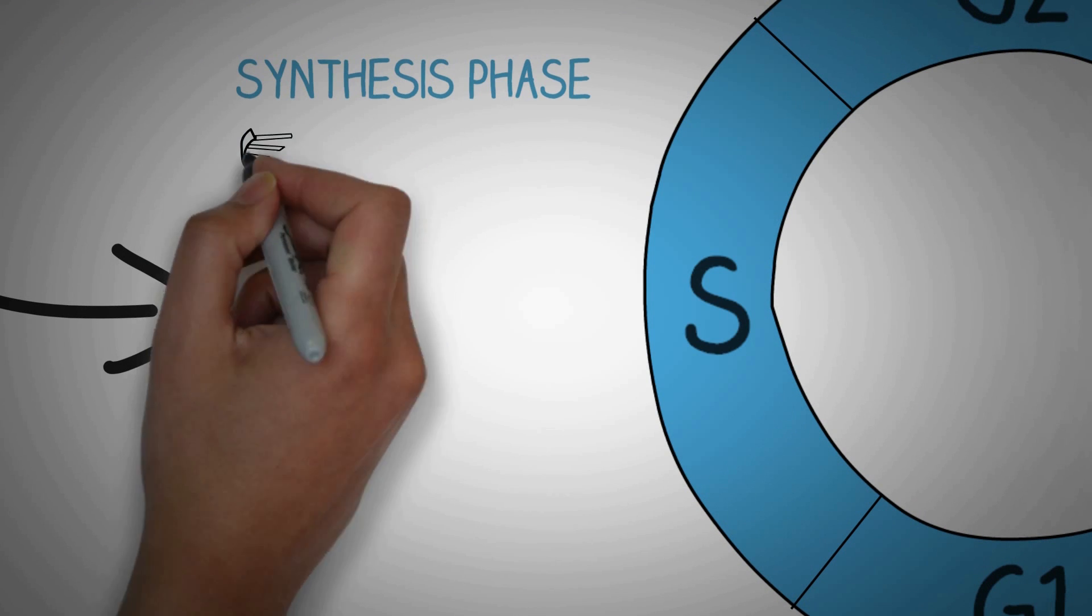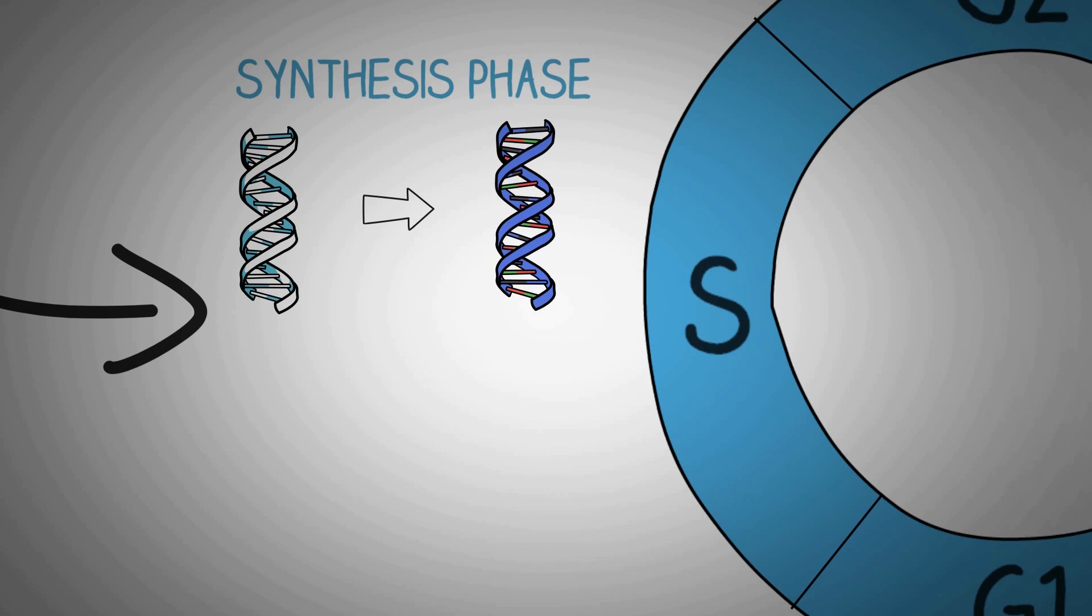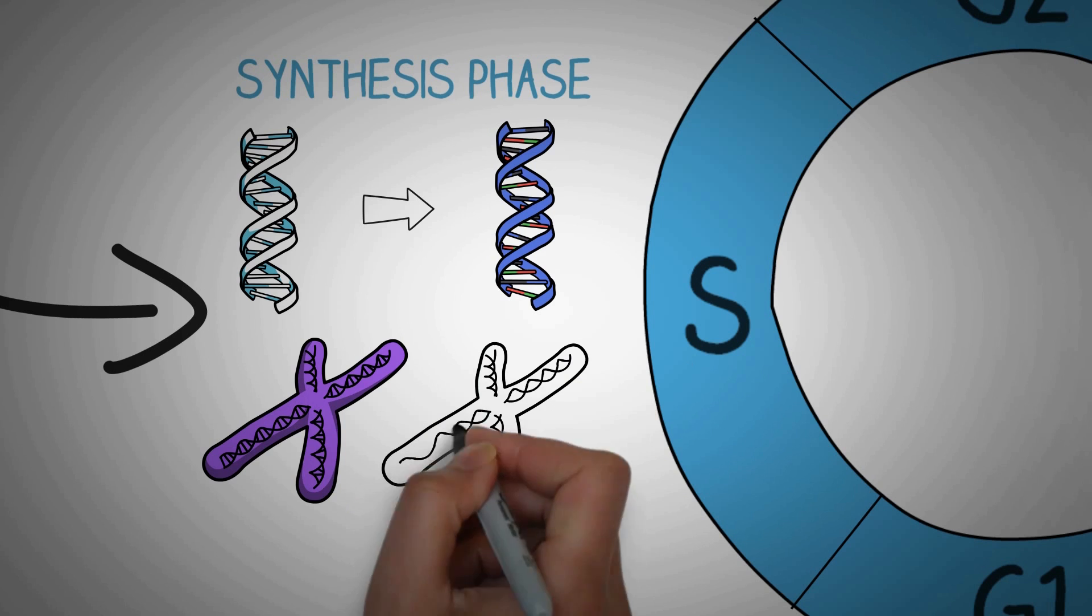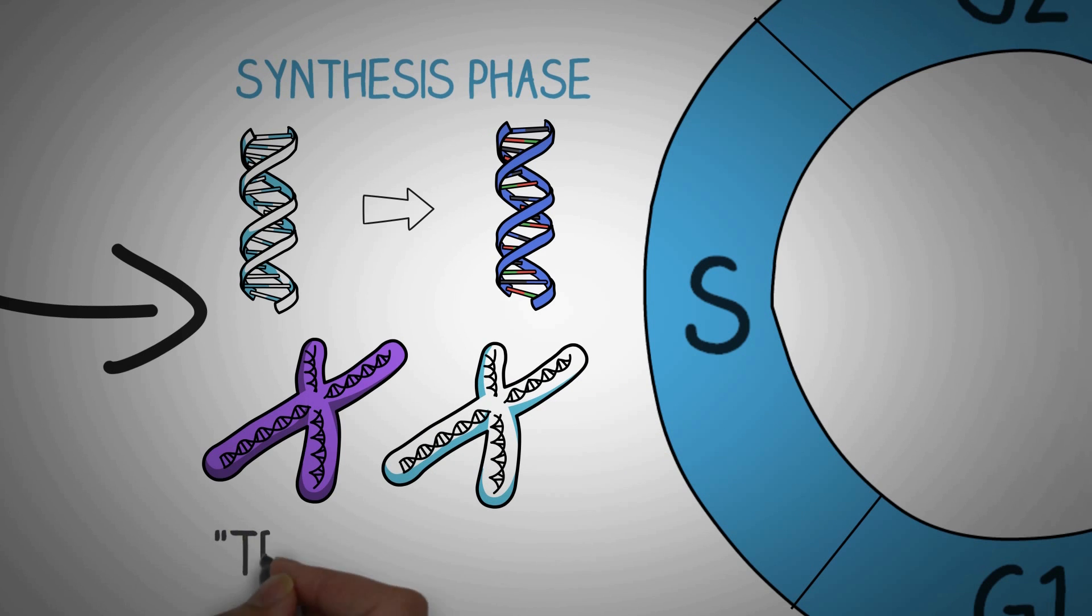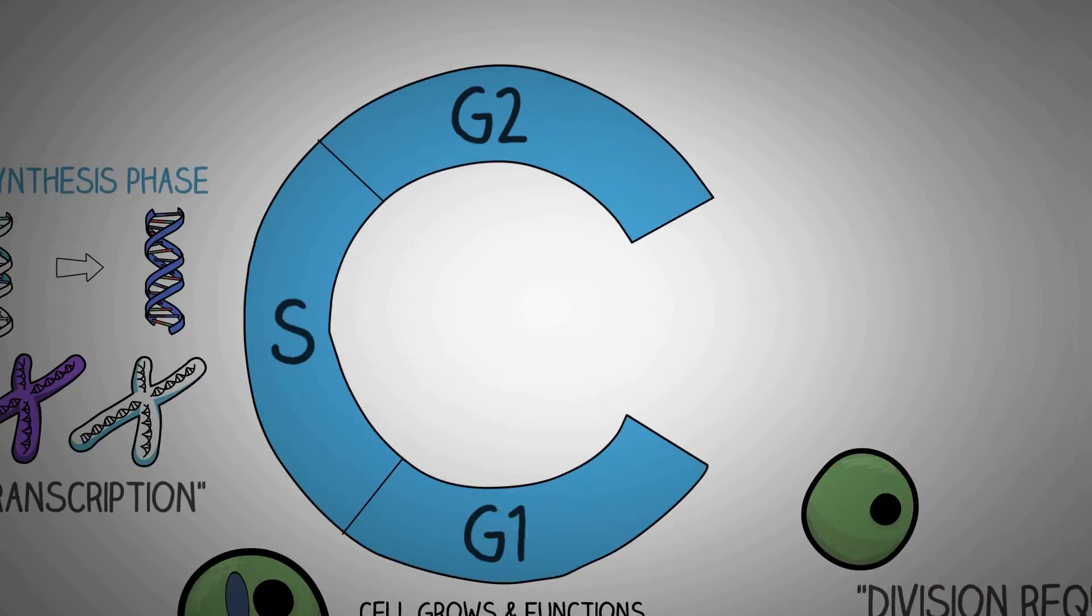The S phase or synthesis phase is associated with synthesis of new DNA from old one. The cell doubles the number of chromosomes. This happens due to a complex process of copying of DNA to form new DNA from the old one. This is known as transcription. If you want to understand this process in detail, make sure to watch the video on transcription on our channel. Link in the description below.